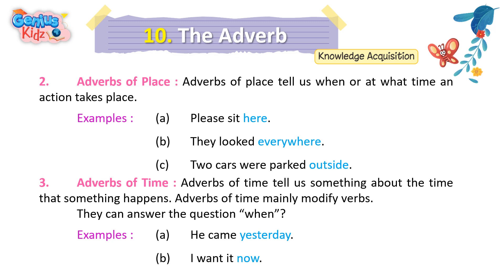3. Adverbs of time. Adverbs of time tell us something about the time that something happens. They mainly modify verbs and can answer the question 'when.' Examples: A. He came yesterday. B. I want it now.